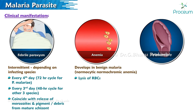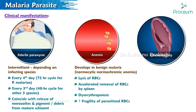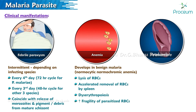Anemia occurs due to lysis of red blood cells, accelerated removal of red blood cells by the spleen, dyserythropoiesis, and increased fragility of parasitized red blood cells. Splenomegaly occurs due to massive proliferation of macrophages that engulf parasitized cells.